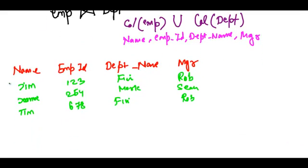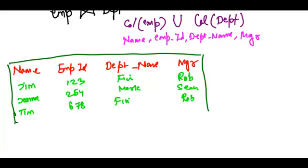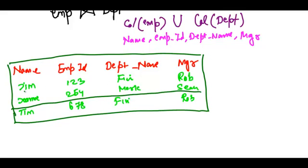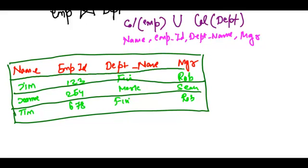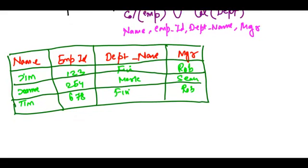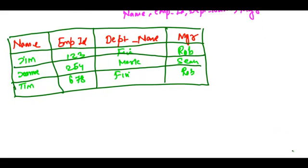This is the table I get when I do a natural join. You can see the results in this table are quite meaningful. Every tuple has the name of the employee, their department, and the manager of that department.